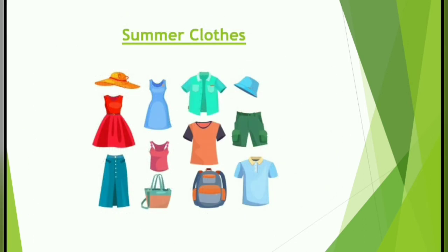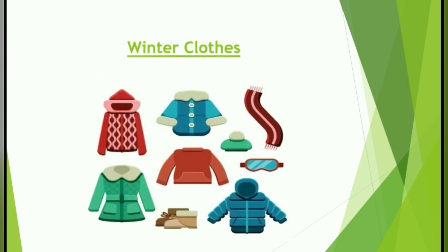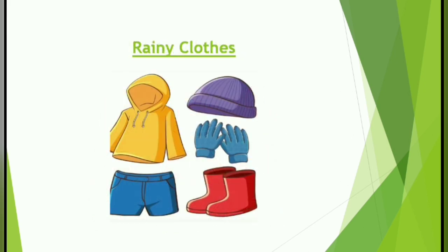Now you can see the picture of summer clothes. In summer we like to wear light clothes, short clothes, and cotton clothes. In winter we like to wear woollen and warm clothes, and in the rainy season we wear raincoats, gumboots, and shorts.